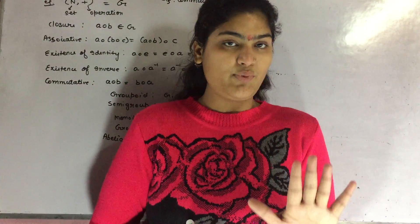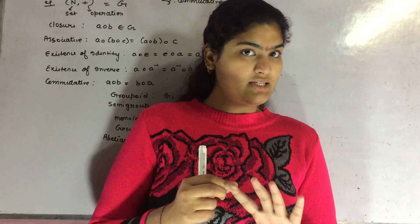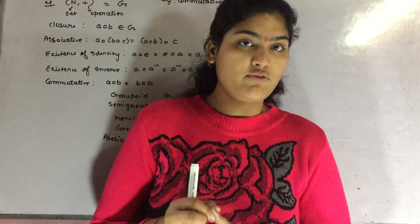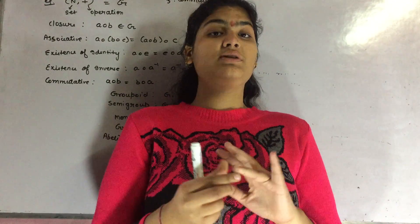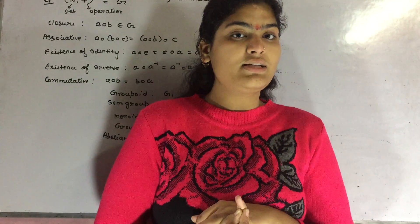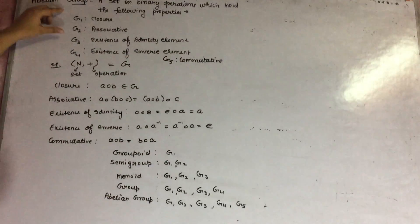So any group is said to be an Abelian group if it holds the five properties: closure, then associative, then existence of an identity and existence of an inverse, and one more thing, commutativity.